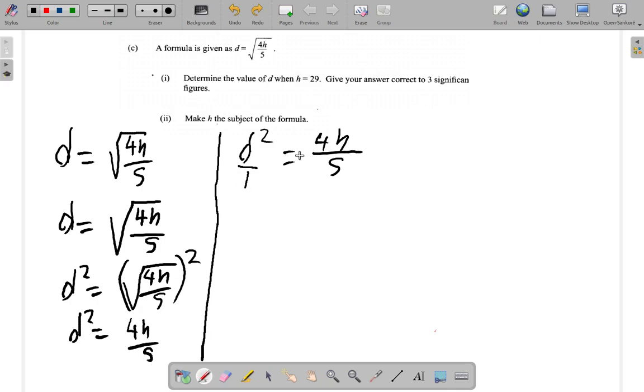If you have d squared over 1 equals 4h over 5, what you end up with is 5d squared equals 4h, because 4h times 1 gives you 5d squared equals 4h.